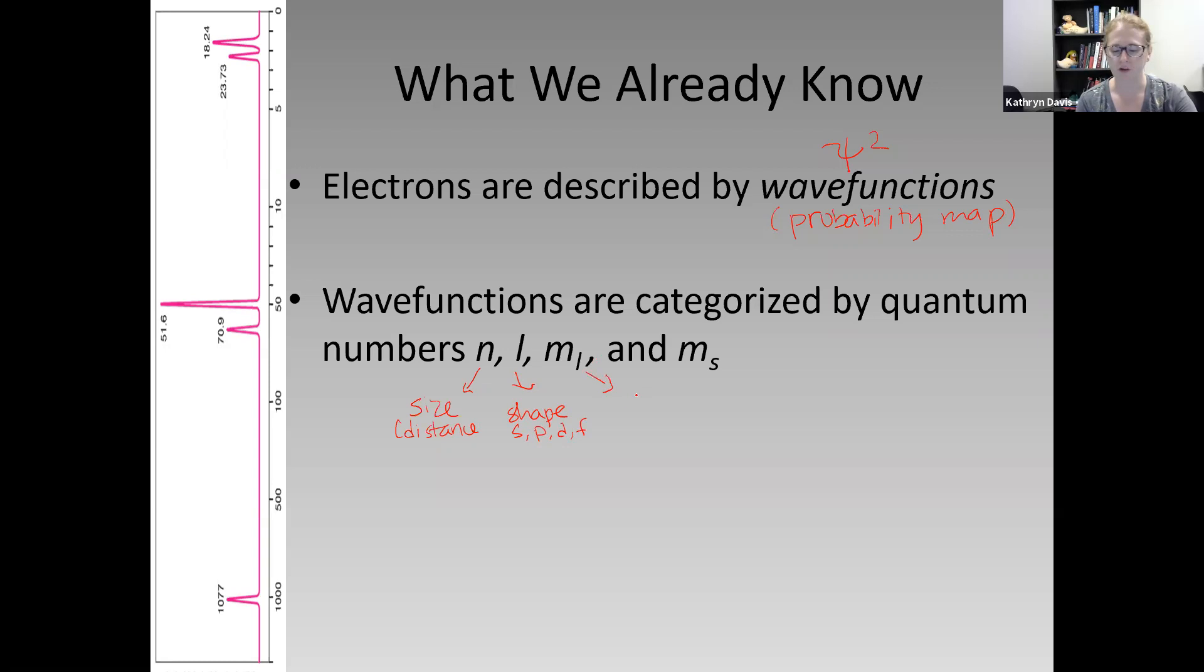m_l, which tells us something about orientation; and m_s, which was a property of an electron called spin. Those four quantum numbers describe an electron in an atom.